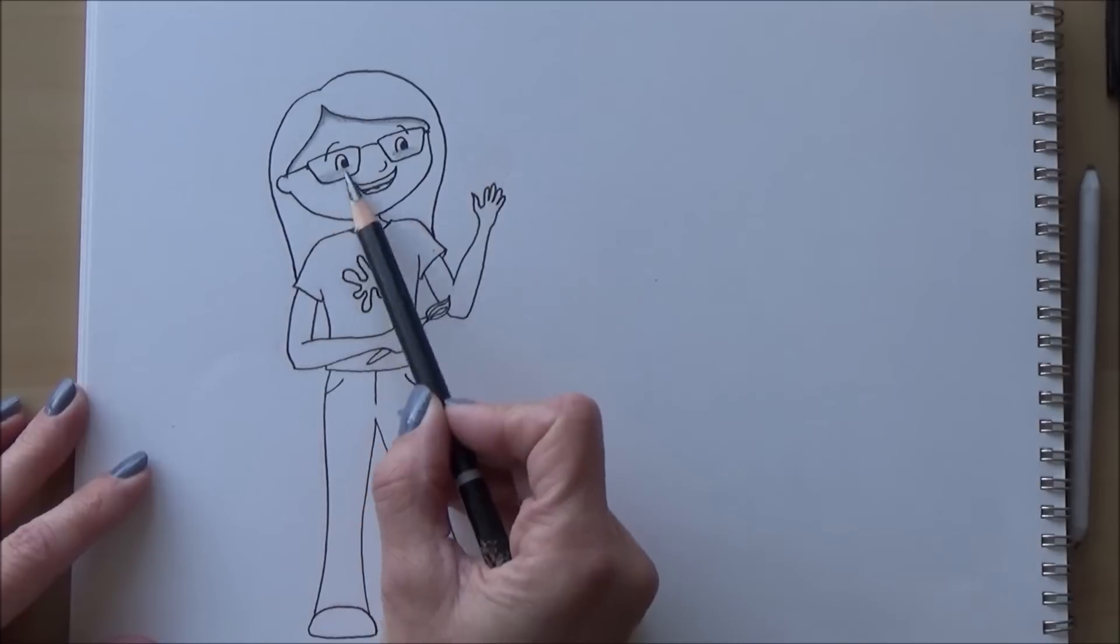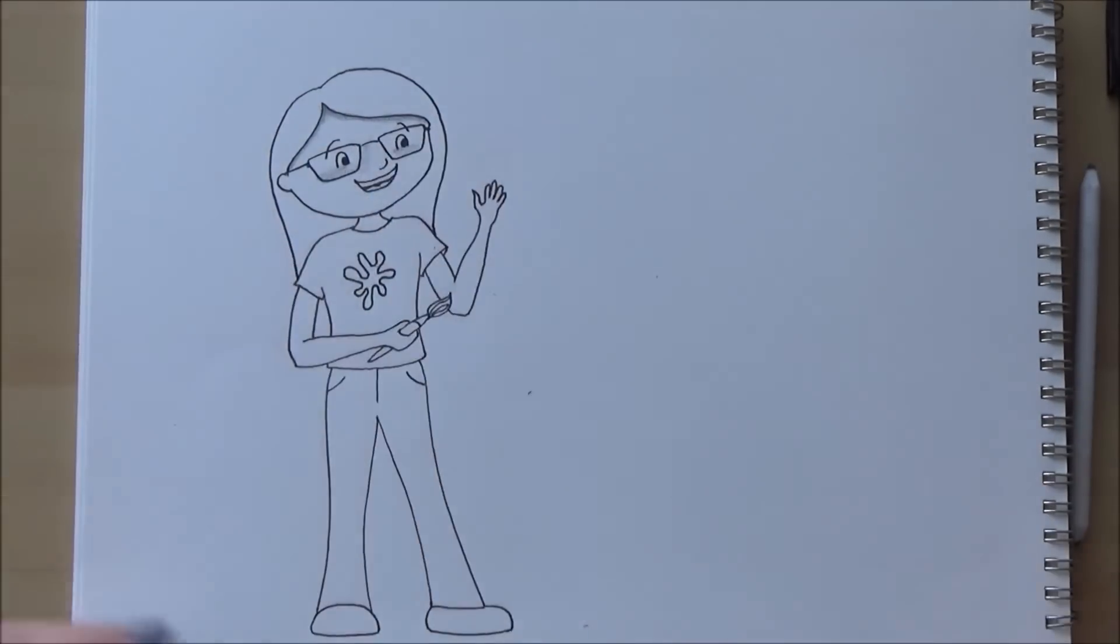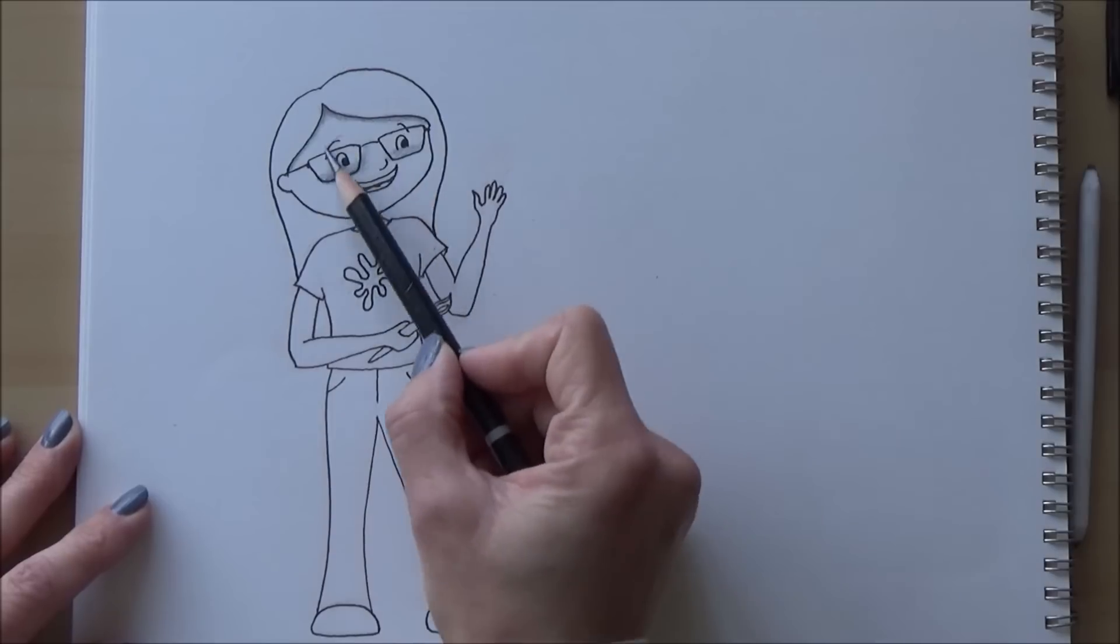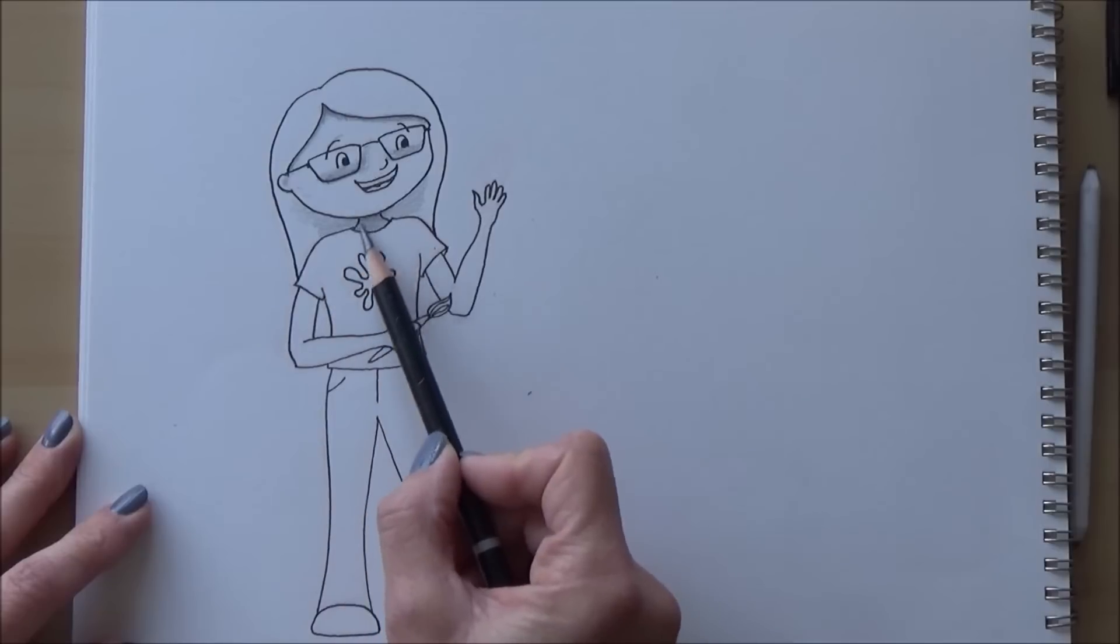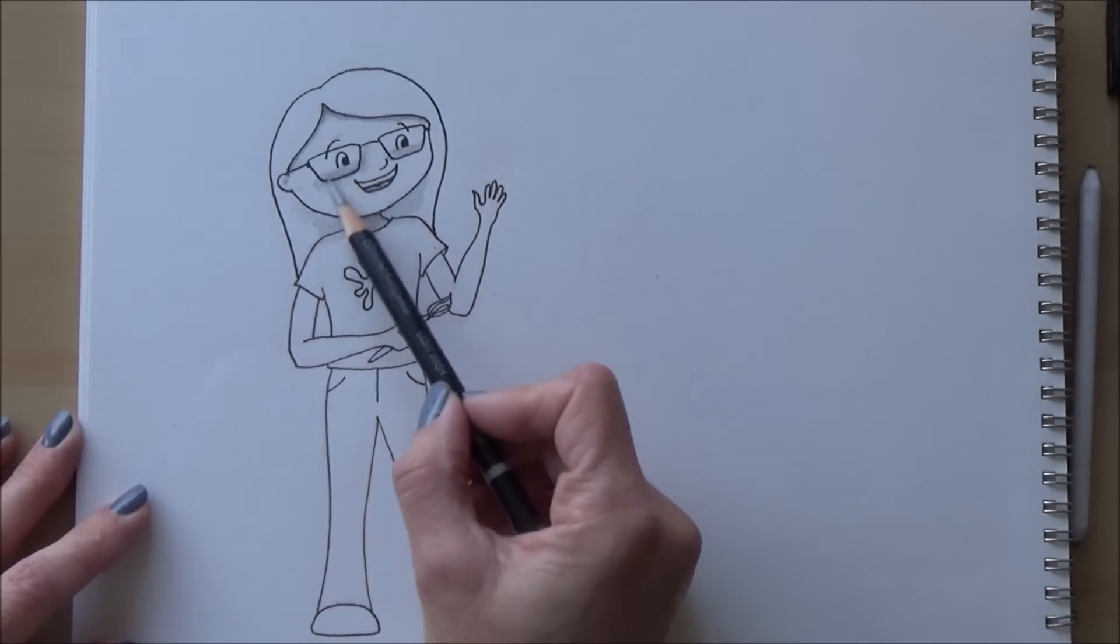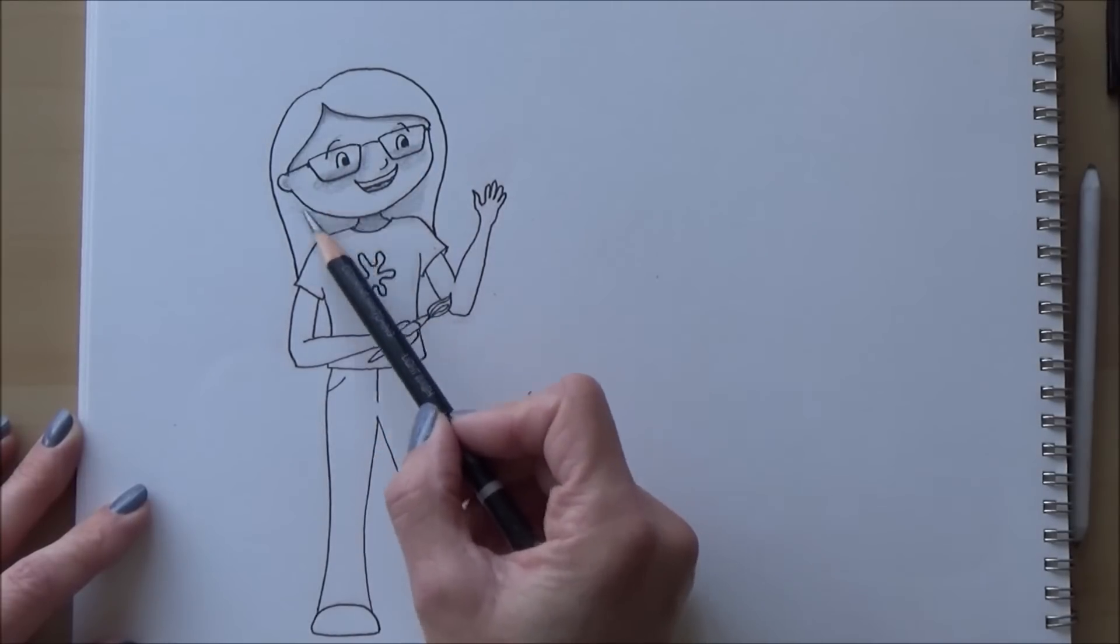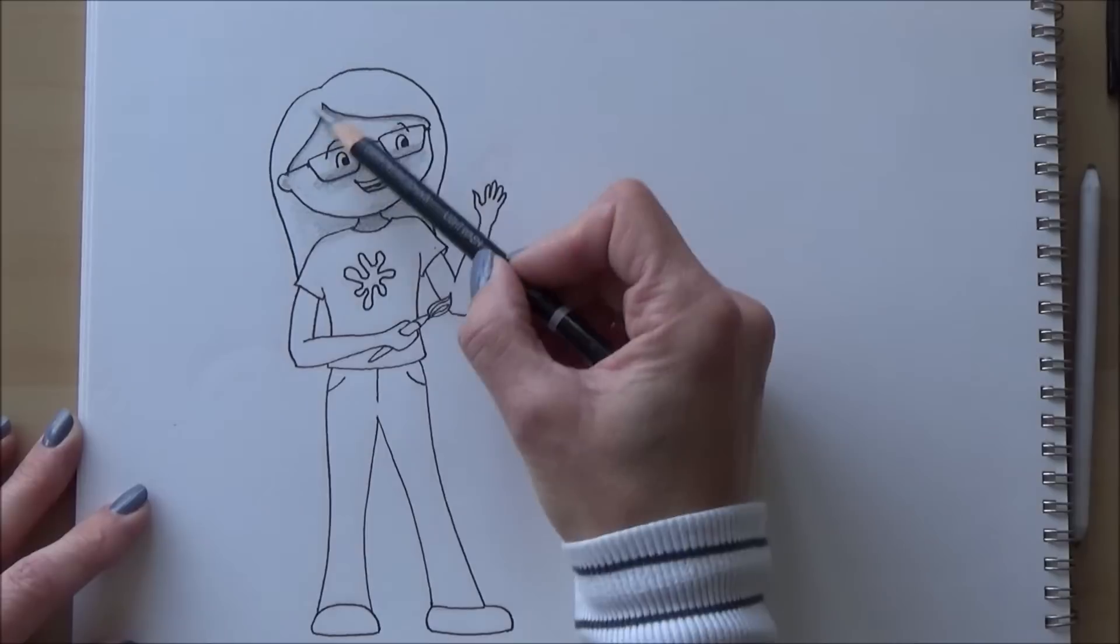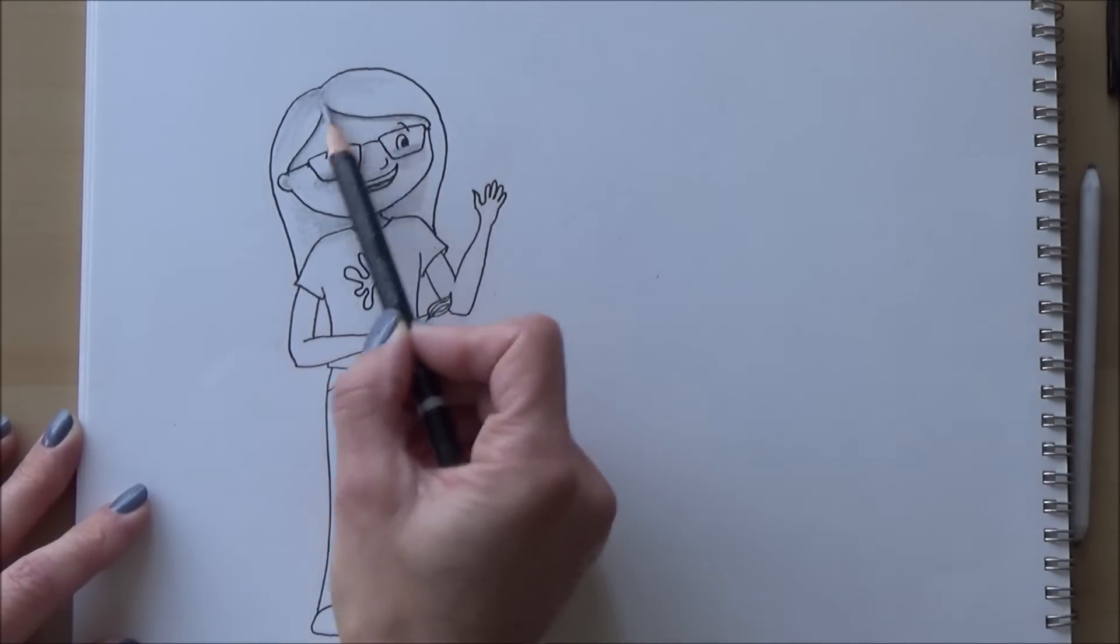So I used an HB pencil and a blending stump to add some shadows, as well as an eraser to pull out some highlights. With the shading, I made sure to hold my pencil quite far back and at an angle to use the side of the pencil lead rather than the point. This would ensure I added light, even layers and didn't go in too dark straight away. The areas I wanted to concentrate on were those where there would be natural shadows, such as under the hairline, under the chin and head, under my glasses edges, and on the undersides of the arms.